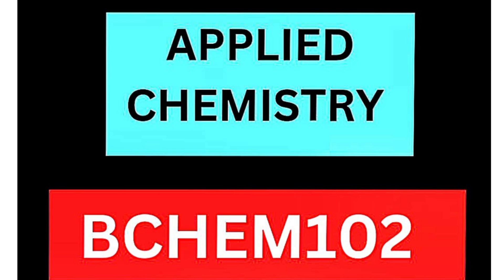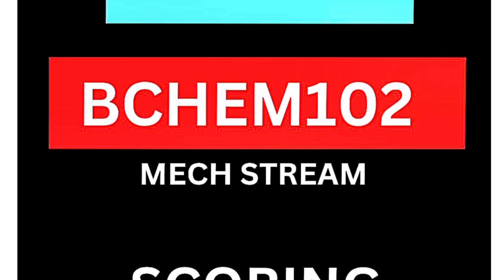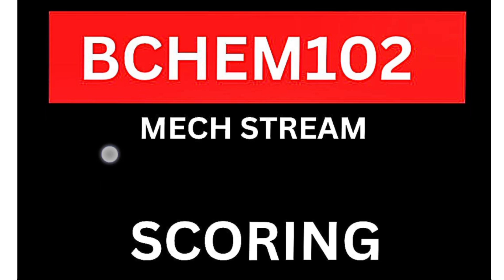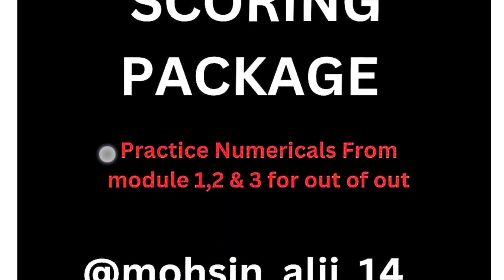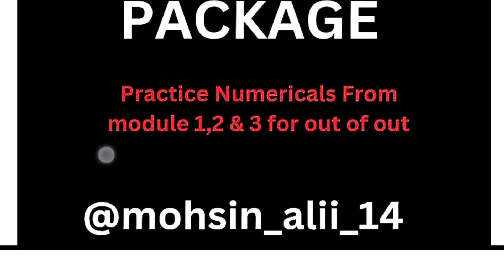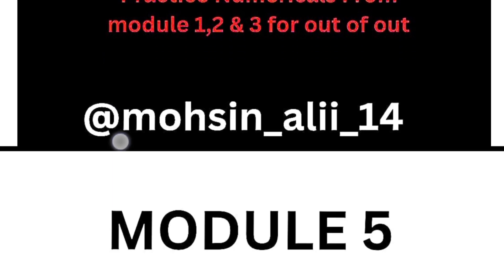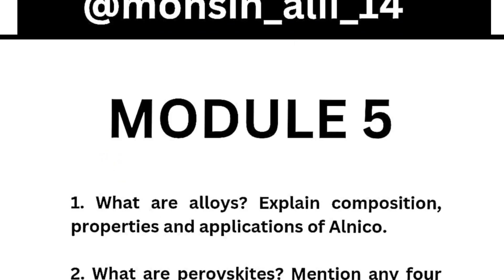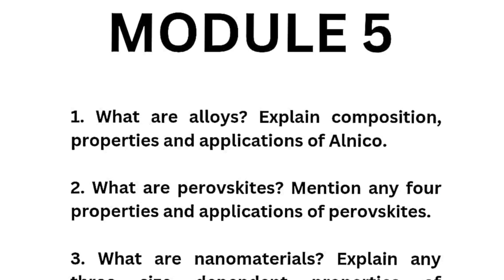Definitely you can get full marks from this much portion. The subject code is BCHEM102, this is for the mechanical stream. Let me discuss here module-wise super important questions. If you want to score more than 95 marks, then definitely you have to go through the numericals from modules 1, 2, and 3. Module 5 is the scoring module in which you can easily get 20 marks.